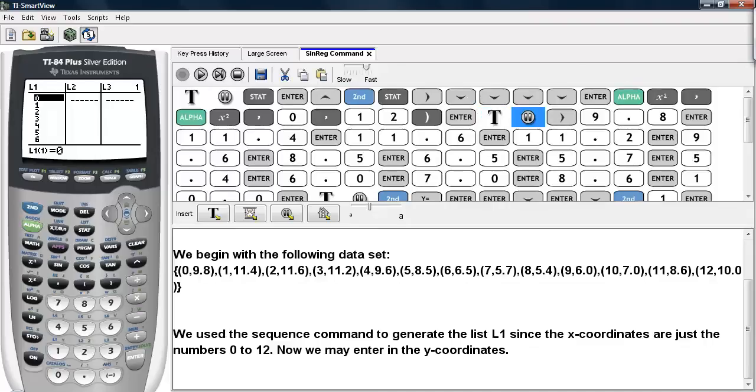Here we can see the numbers 0 all the way up through 12 are now in L1, and these are the x-coordinates of my points. Now I'm going to go ahead and enter in the y-coordinates. We'll go ahead and enter those, 9.8 being the first one, and then 11.4, and 11.6, etc., until we get to the end.